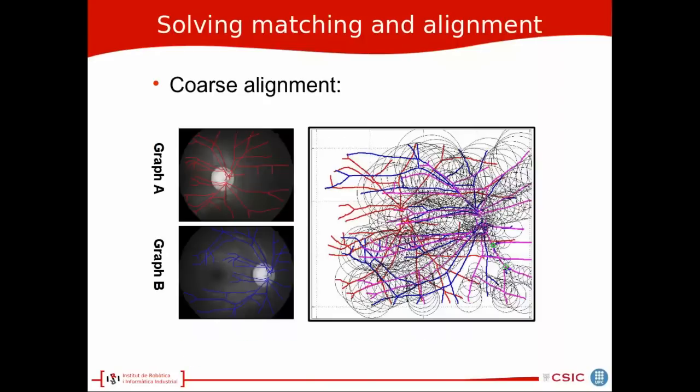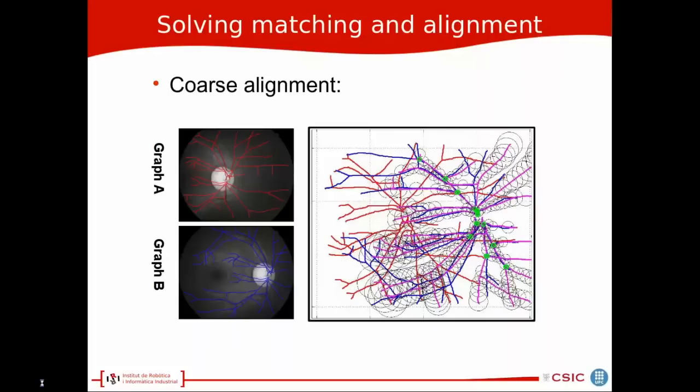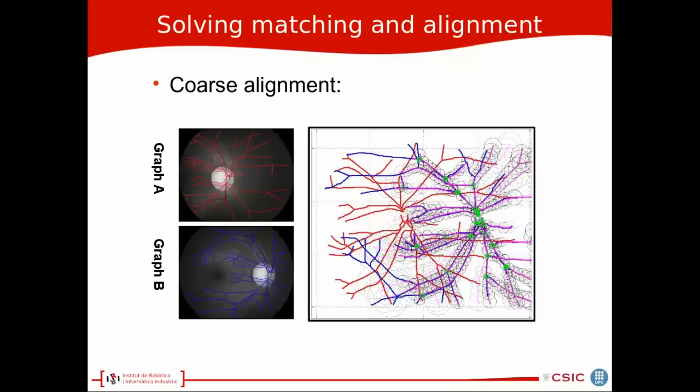To illustrate the steps of the coarse alignment, we will show in this example of a retina how first we pick two random correspondences, and use these correspondences to define a mapping between the two graphs. Then we increase the number of correspondences, and each new correspondence restricts more and more the mean and covariance of the mapping. And finally we get to the final solution of this coarse alignment.